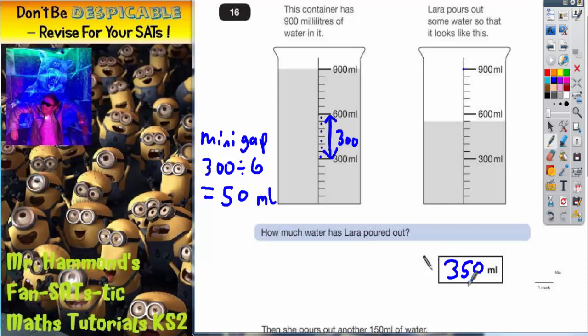There is another way you could have done that. You could have said well she started with 900 and she's finished with one gap below 600, and one gap of 50 below 600 would be 550. So she started with 900 and she's finished with 550.